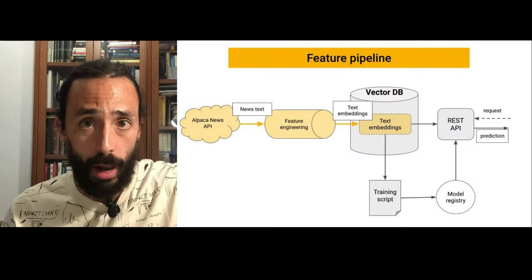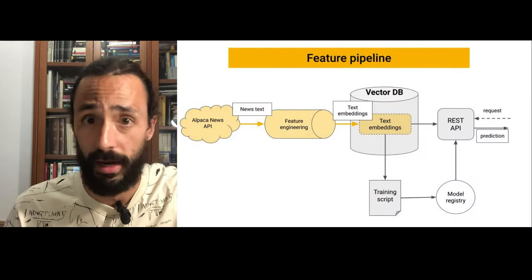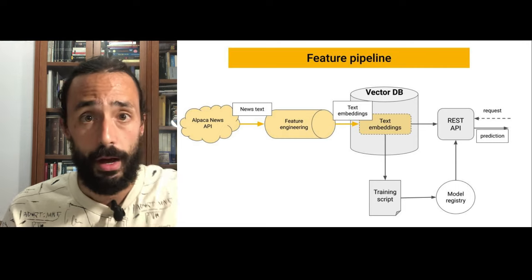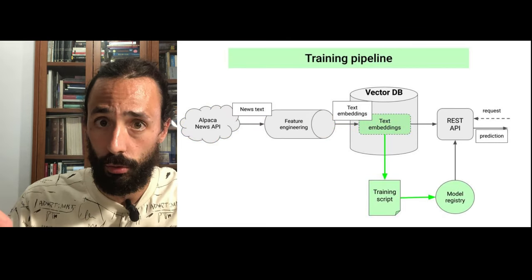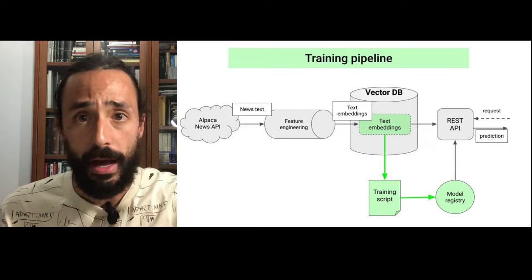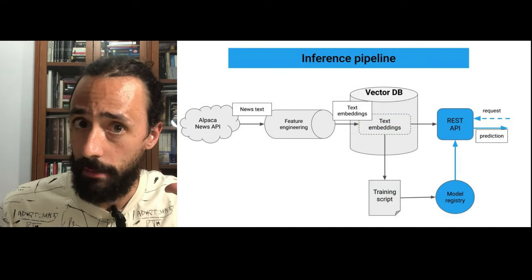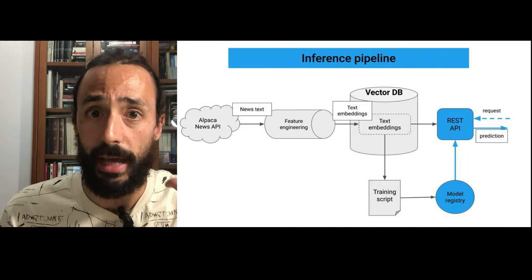This is not just a demo — this is a fully working product, which means we're going to build three pipelines: a feature pipeline that ingests real-time financial news, a training pipeline that fine-tunes a base LLM for our particular problem, and an inference pipeline that deploys the model as a REST API.